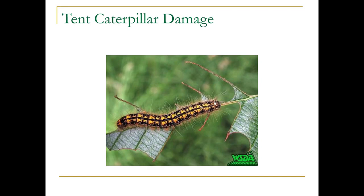Here's some tent caterpillar damage. I just want you to note the white dot on the head of this caterpillar. That's actually an egg from a tachinid fly, and that's going to parasitize this caterpillar. So it's a great natural enemy that naturally occurs in our area.